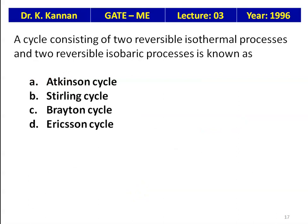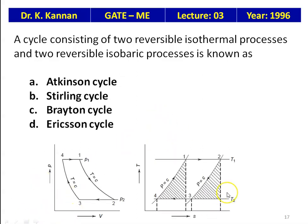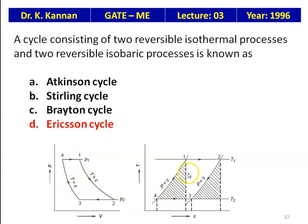The cycle consisting of two reversible isothermal processes and two reversible isobaric processes — process 1→2 isothermal, 2→3 constant pressure, 3→4 isothermal, 4→1 constant pressure — is the Ericsson cycle. The Ericsson cycle consists of two isothermal processes and two isobaric (constant pressure) processes.